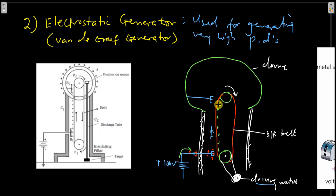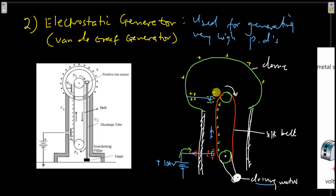When the belt reaches the second electrode, negative charges will be induced at this point, and positive charges will be induced at the dome. These positive charges will be distributed across the dome. Because it is uniform in shape, the charges will be distributed uniformly. Because of the high electric field intensity, corona discharge will also take place at this point, and the negative charges will discharge the belt before it goes over. So this side of the belt does not have any charge because the belt is discharged at this point before it crosses over the pulley.